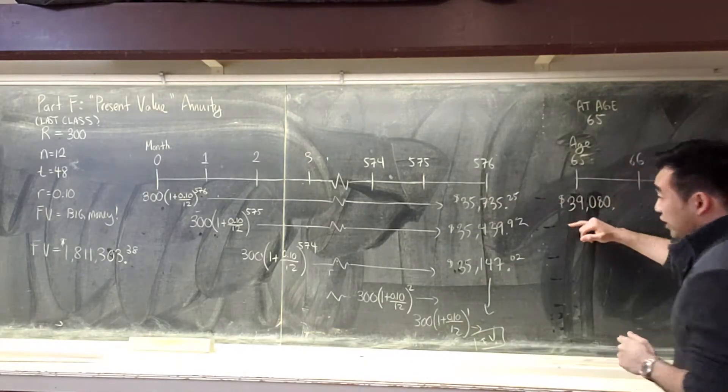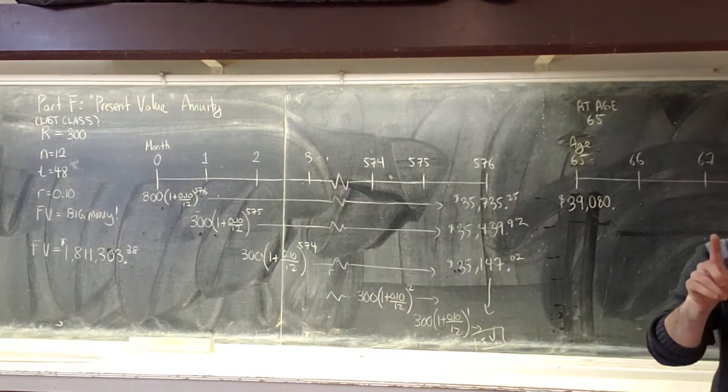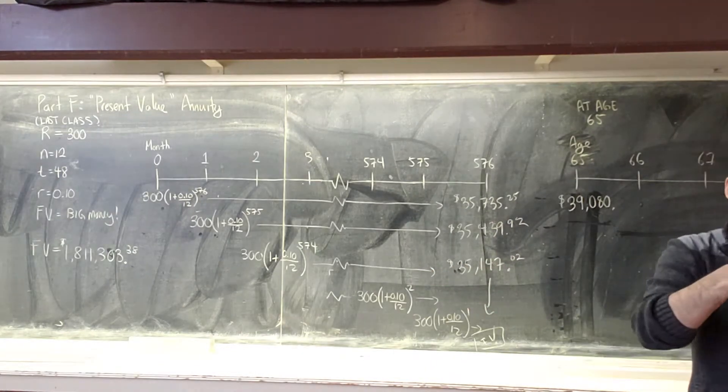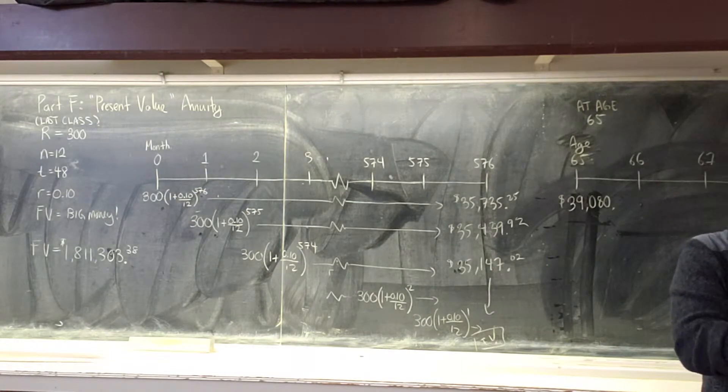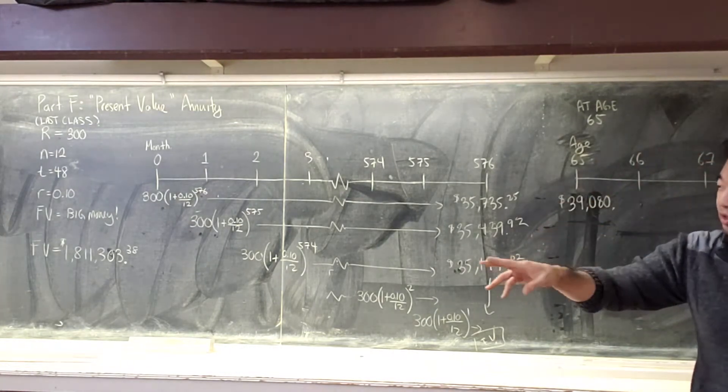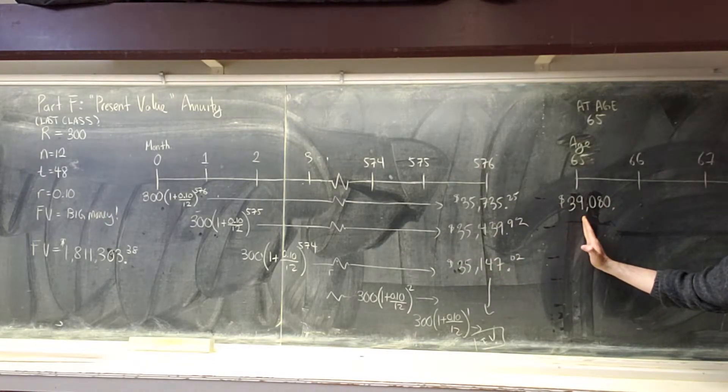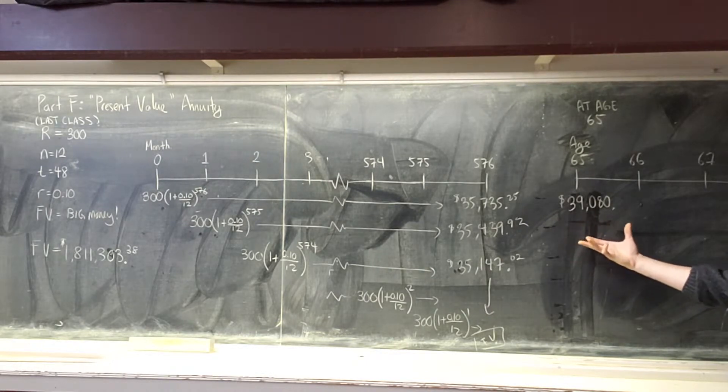And $1.8 million is going to continue to grow. So here's the abstract thinking portion. Do you actually need $1.8 million exactly at 65 years of age? No. You can have less because it's still going to continue to grow.